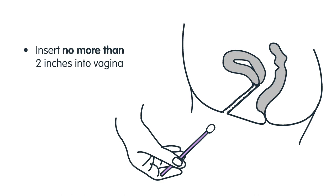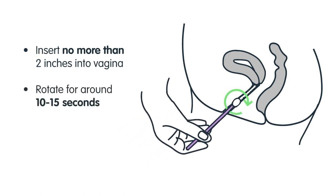Carefully insert the swab no more than two inches into the vagina and rotate the swab for 10 to 15 seconds around the inside of the vagina.